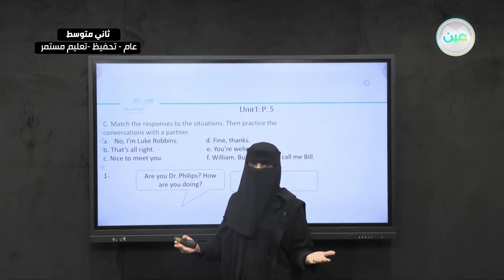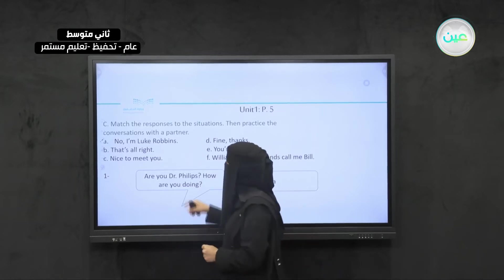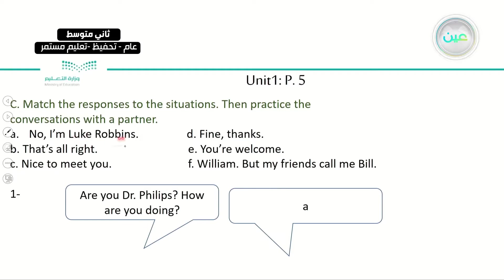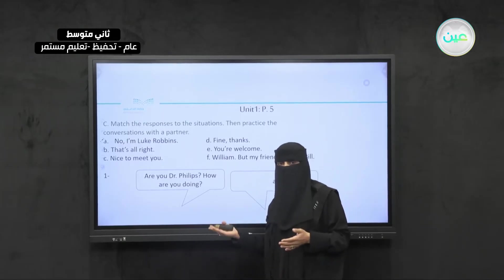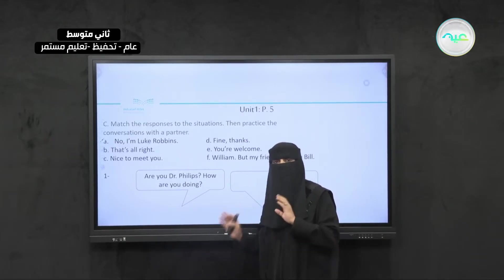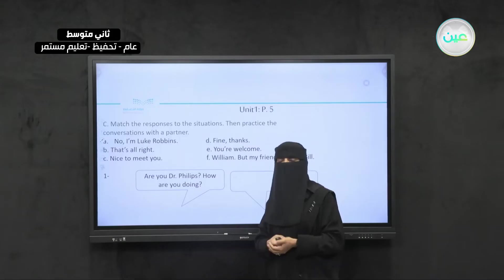Let one of you ask the question and the other one respond, and you can switch parts. Here we have: A — 'No, I'm Luke Robbins'; B — 'Nice to meet you'; D — 'Fine, thanks'; E — 'You're welcome'; F — 'William, but my friends call me Bill.' The first one is already an example — the answer is A: 'No, I'm Luke Robbins.' Pause the video, look at the questions from one until six, look at the conversations, and try to match the letters with the proper conversation.